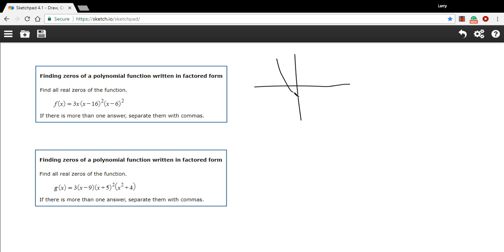You might have a function that looks like this. And a zero of a function is where the value of the function, or the y value of the function, is zero. And that is where this crosses the x-axis. At both of these points, the y value of the function is zero. So we call those zeros of a function.